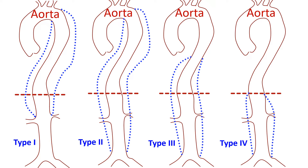Type 3: the distal half of the descending thoracic aorta and abdominal aorta up to the bifurcation is involved. Type 4: the entire infradiaphragmatic portion of the descending aorta is involved.